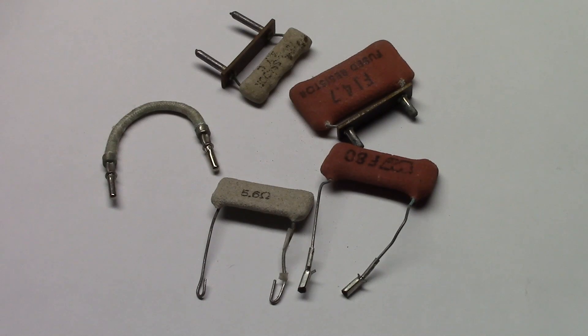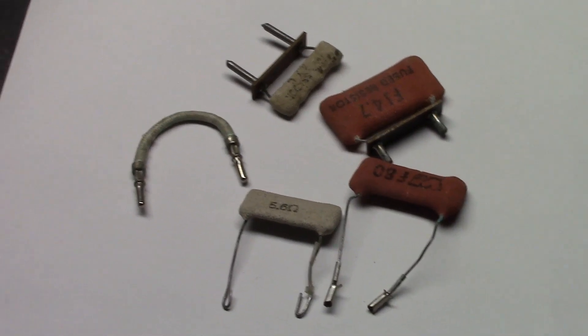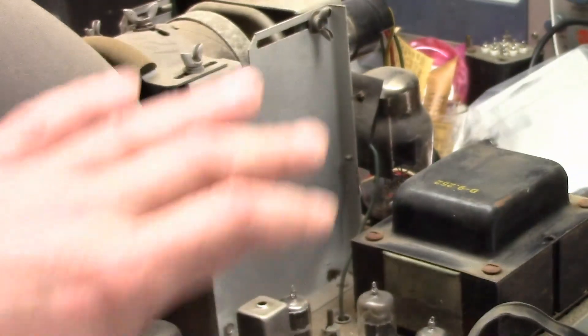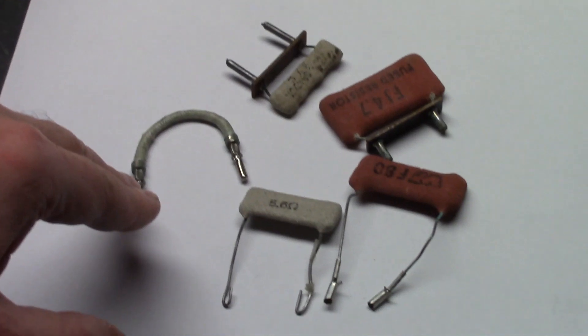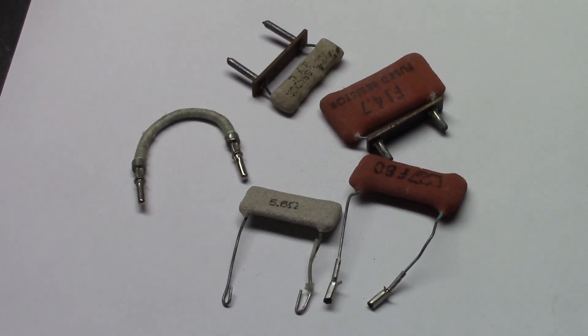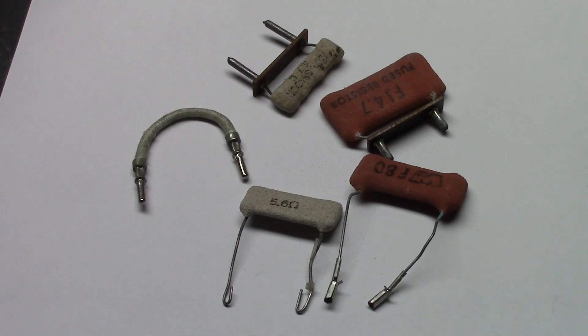Now, there's another component that started being used at the same time as these, and that is a solid state rectifier. At first selenium, later silicon. You may have noticed that sets that have tube rectifiers, like this set with 5U4, they never have these fusible resistors, because they don't need them. So, why are these needed? Because the early solid state rectifiers could not handle surge current very well.